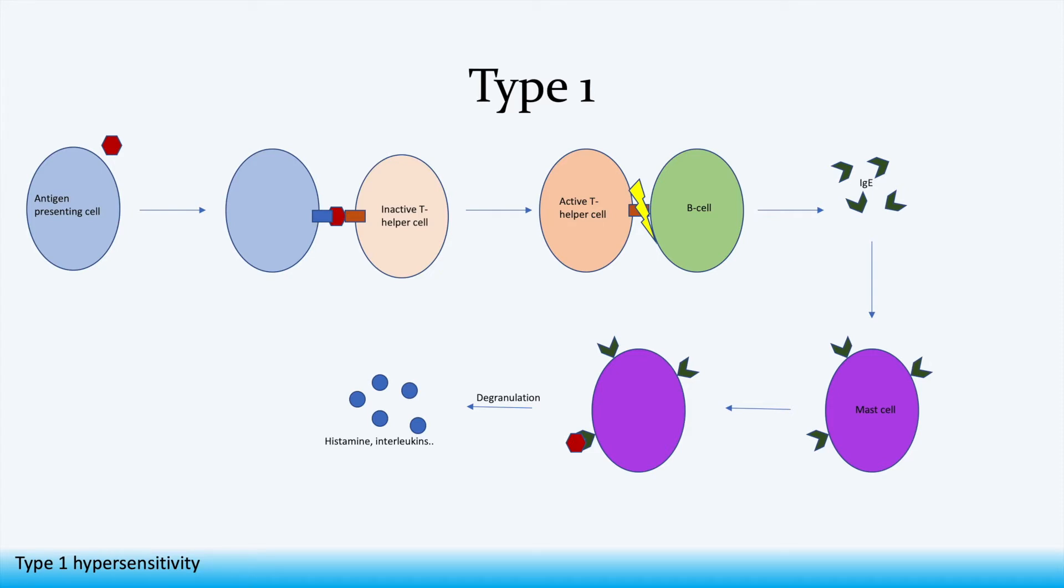Right, now that we've done a brief overview let's take a step-by-step look at the process. The first part of type 1 hypersensitivity is sensitization. It is necessary in order for the process to occur. An antigen presenting cell such as a dendritic cell comes across an antigen or allergen and engulfs it. Then it displays part of the allergen on its major histocompatibility complex 2 or MHC2 receptor.